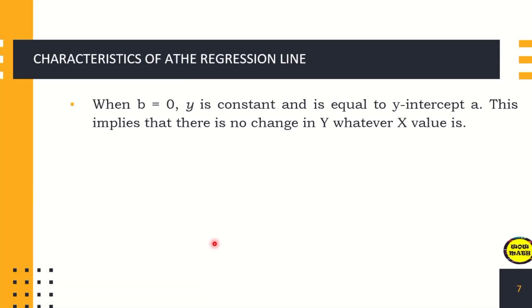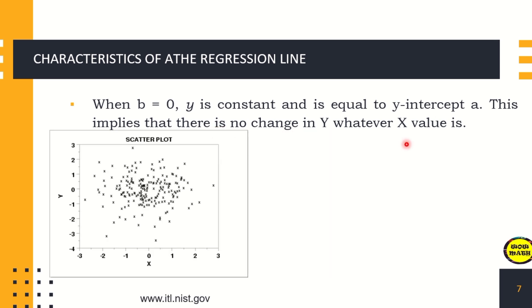When b is equal to zero, y is constant and equal to the y-intercept a. This implies there is no change in y whatever the x value is. As seen on the scatter plot, the data points show no pattern, meaning there is no relationship between x and y.